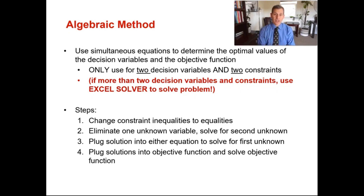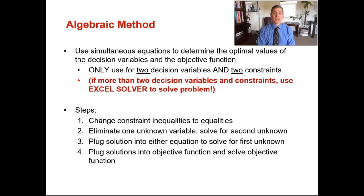Step two is eliminate one unknown variable and solve for the second unknown. You're going to have an x1 and x2 because you have two decision variables — you're going to eliminate one and solve for either x1 or x2. Step three: plug that solution into either one of your equations and solve for the first unknown. Step four: you have your x1 and x2 decision variables determined — plug them into the objective function and solve for what you're maximizing, which is your Z, your maximum profit.